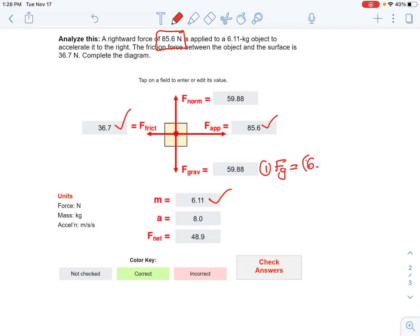So we have 6.11 kilograms times 9.8. And then after that, I can go ahead and conclude that the normal force is 59.88. So now I got everything in the diagram.